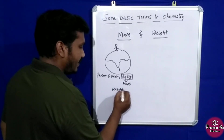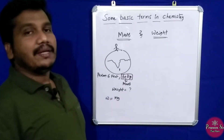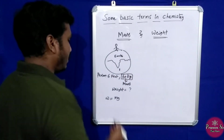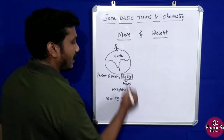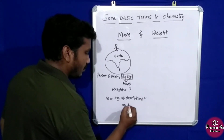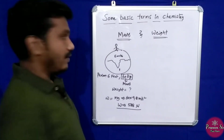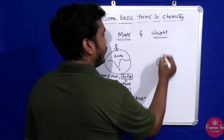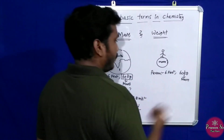The formula for weight is W equals mg, where m is mass and g is gravity. For example, a person of 60 kg — their weight in Newtons is calculated using this formula. Mass never changes — it is constant. If we calculate weight, weight will change.